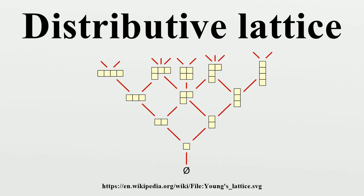The number of elements in free distributive lattices with N generators is given by the Dedekind numbers. These numbers grow rapidly and are known only for N ≤ 8. They are: 2, 3, 6, 20, 168, 7,581, 7,828,354, 2,414,682,040,998, 56,130,437,228,687,557,907,788. The numbers above count the number of free distributive lattices in which the lattice operations are joins and meets of finite sets of elements, including the empty set.